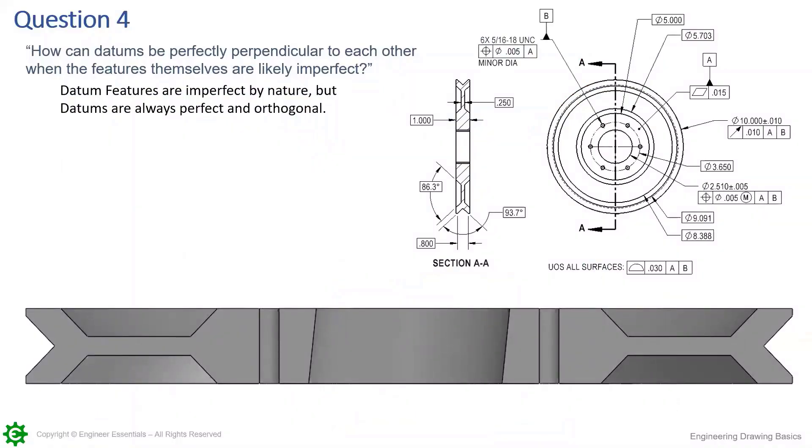All right, for question number four, this is a good question to cover. How can datums be perfectly perpendicular? We always say datums are either perfect axes, lines, or planes.